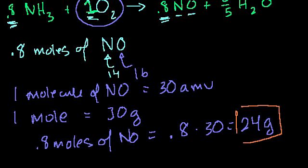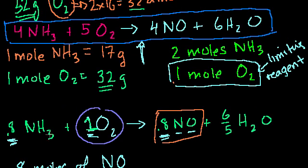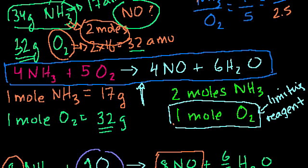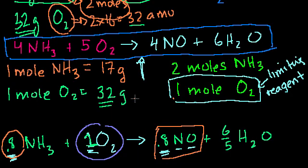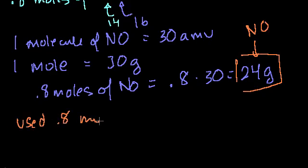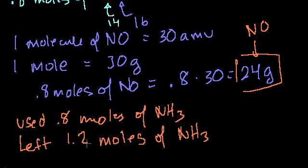We're going to produce 24 grams of nitrogen monoxide. You might ask: we're only using 0.8 moles of ammonia, but we were given 2 moles — what happens with the leftover? Assuming we mix it really well, we'll literally end up with 1.2 moles of ammonia doing nothing at the end. You can figure out the grams by multiplying 1.2 × 17 grams per mole.